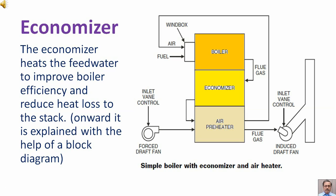In this block diagram, we have shown the air preheater, economizer, and the boiler. Flue gas passes through the economizer, then through the air preheater, and then goes to the induced draft fan.